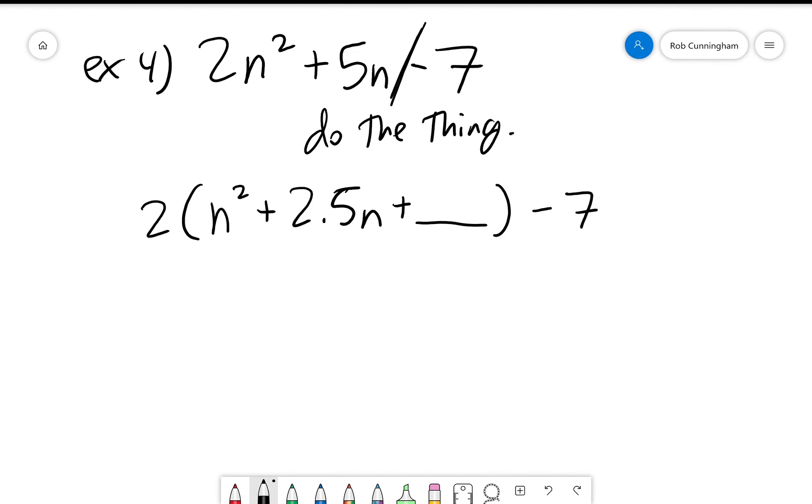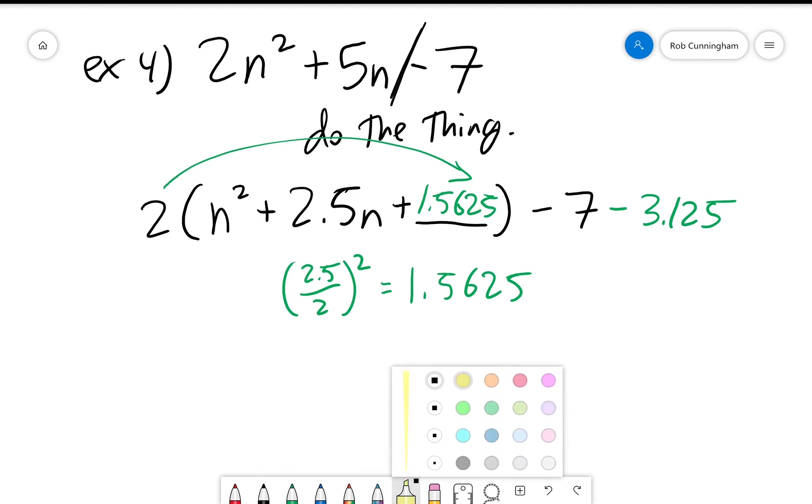Remember how I said that when you are completing the square and there's a number in front of the n squared or the x squared, you've got to factor that number out even when it hurts, and in this case it definitely hurts. Now I've got my calculator on me, so I know that 2.5 divided by 2 and then squared is 1.5625. I also know that I'm subtracting not 1.5625 but 2 times 1.5625, so I'm actually subtracting off 3.125. I want to make it as clear as I can that this number which I added with one hand and this number which I subtracted with the other hand are the same, and that's why I'm allowed to do it—because I added 3.125 in here, I had to subtract 3.125 on the outside.